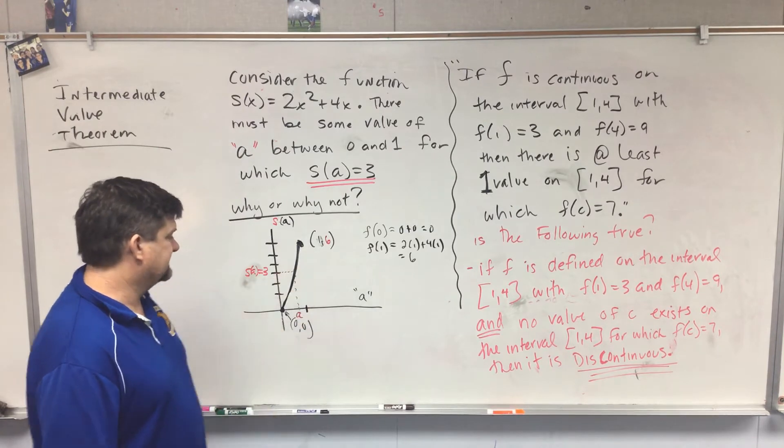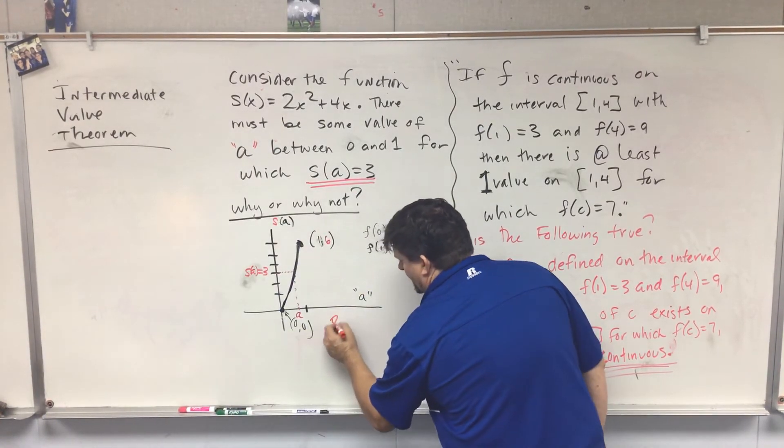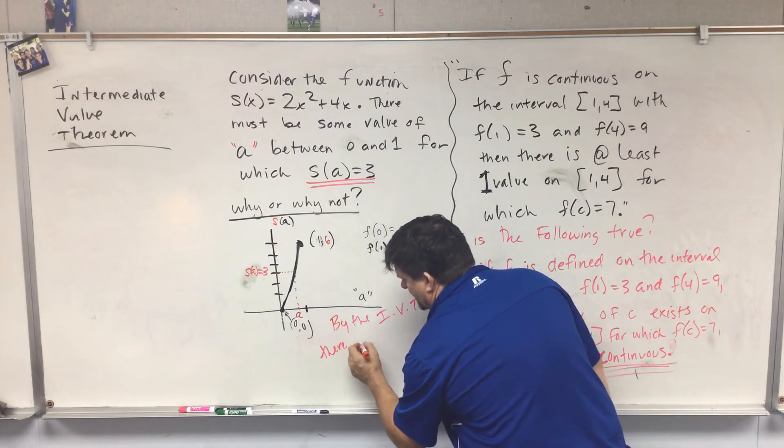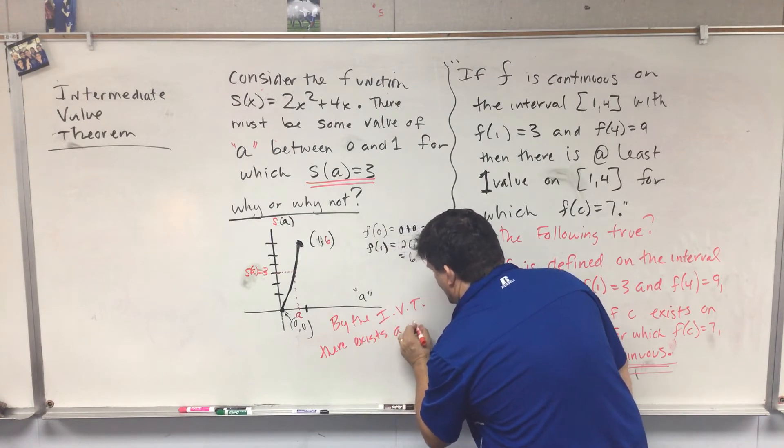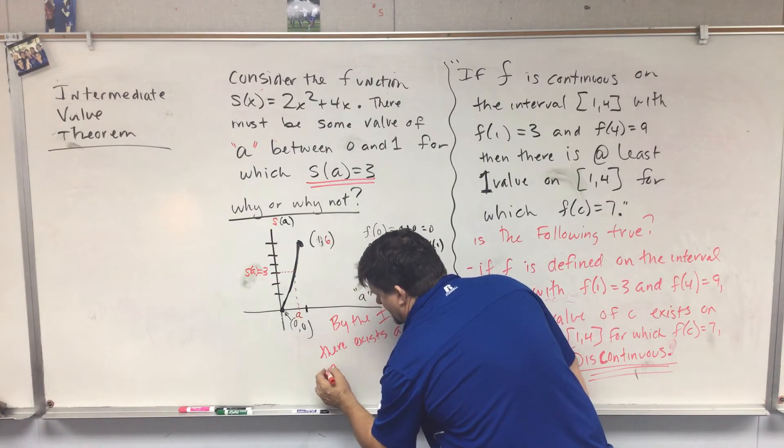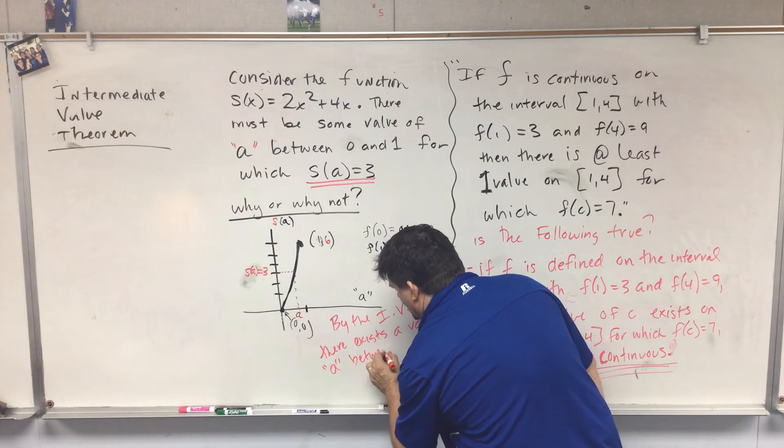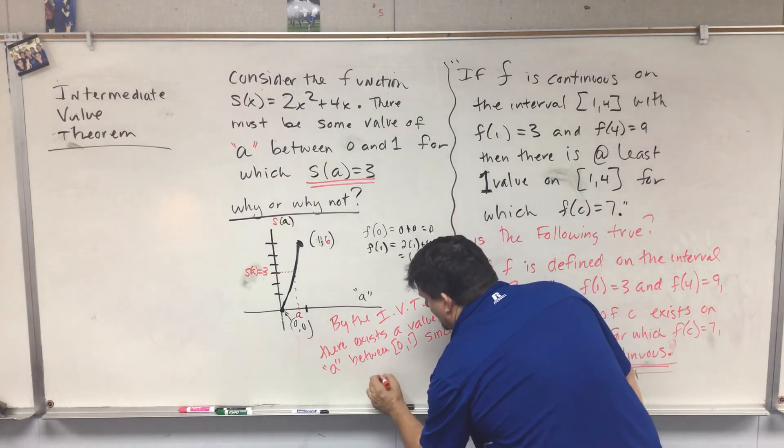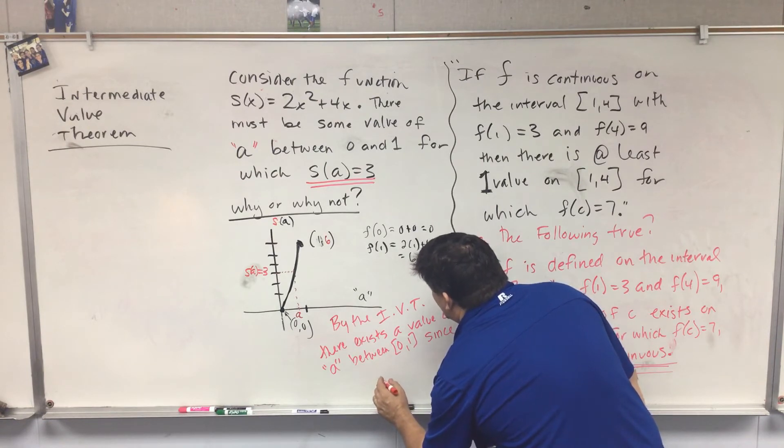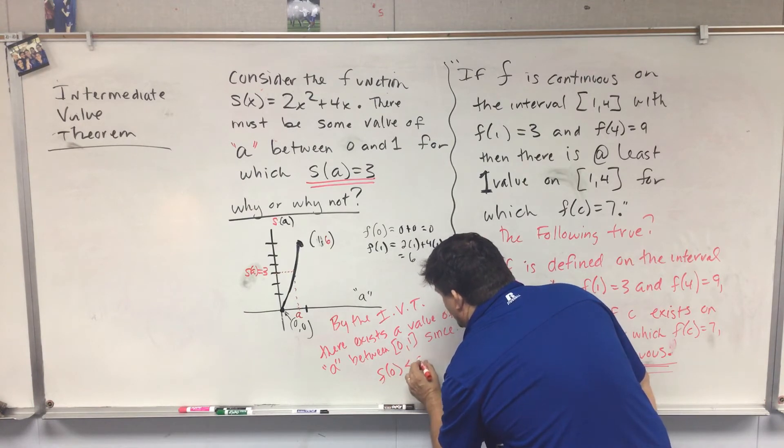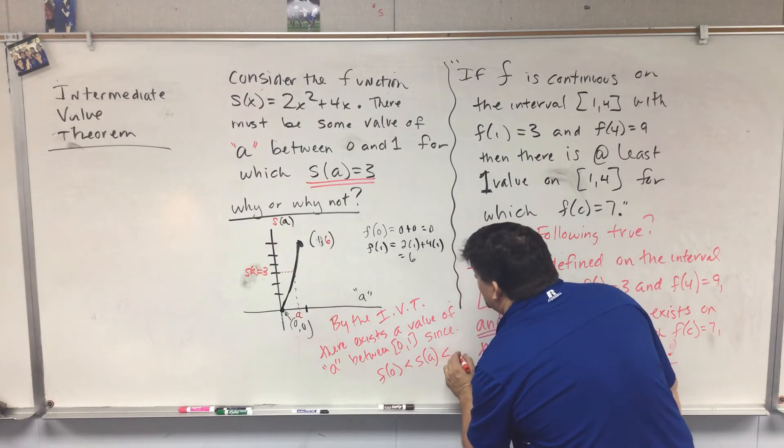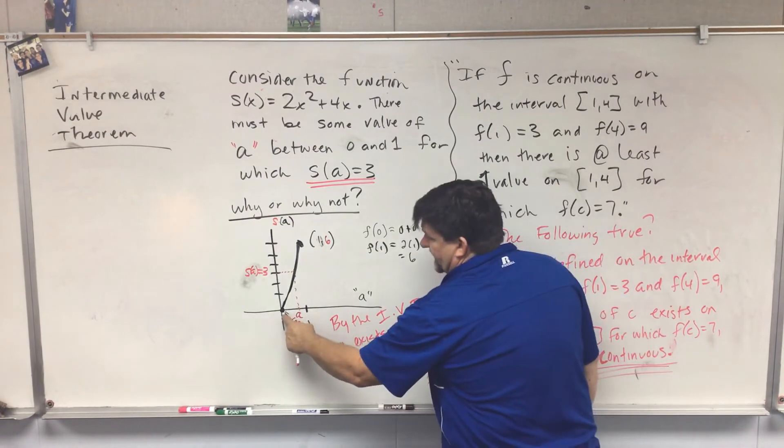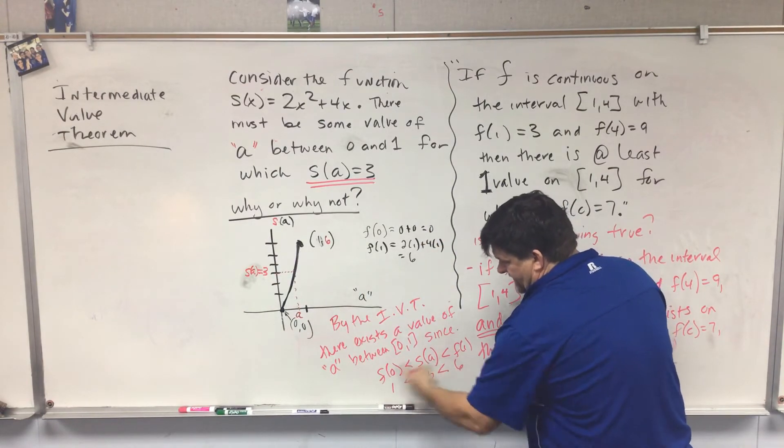So remember, if s(a) gives me 3, then I have a value of a right there. So why or why not? You've got to decide, does it have a value of a? Yeah, it has a value of a because the output of 3, s(a) equals 3, is between 0 and 6. So we say by the Intermediate Value Theorem, there exists a value of a between 0 and 1. F(0) is less than s(a) which is less than f(1).